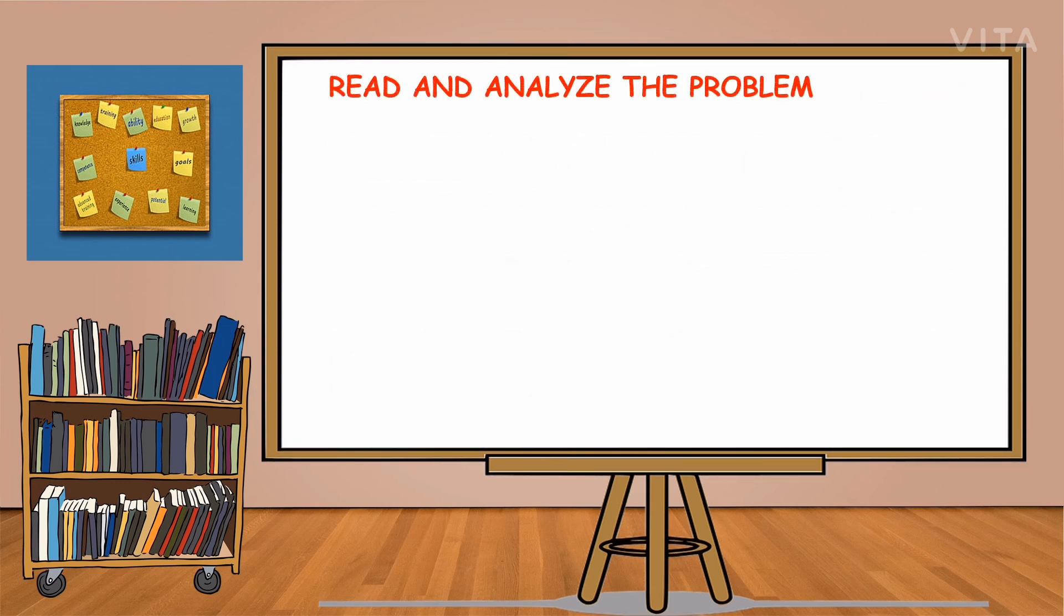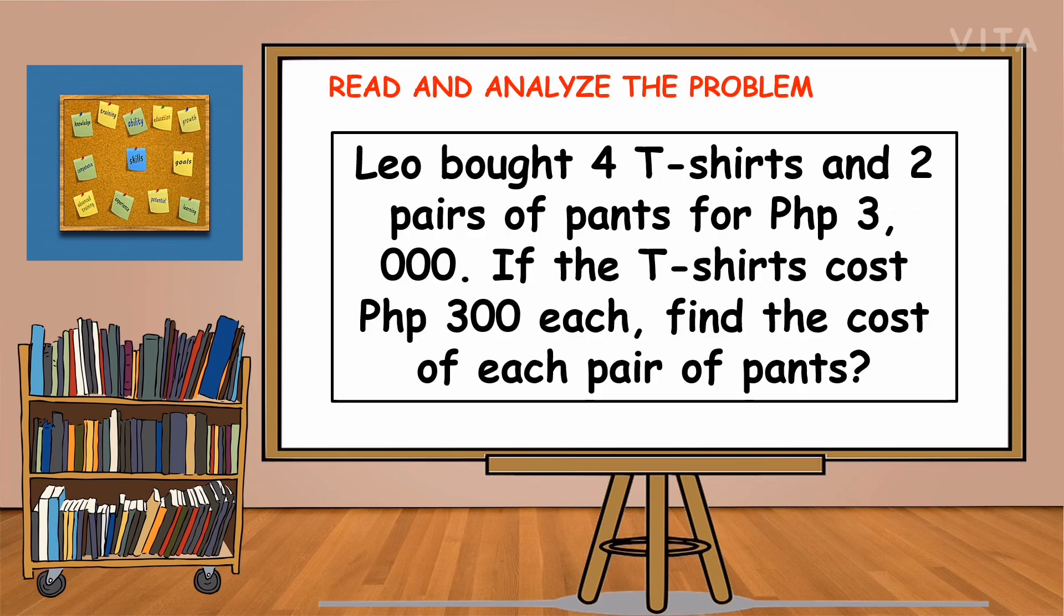Let us read and analyze the problem. Leo bought 4 t-shirts and 2 pairs of pants for 3,000 pesos. If the t-shirts cost 300 pesos each, find the cost of each pair of pants.